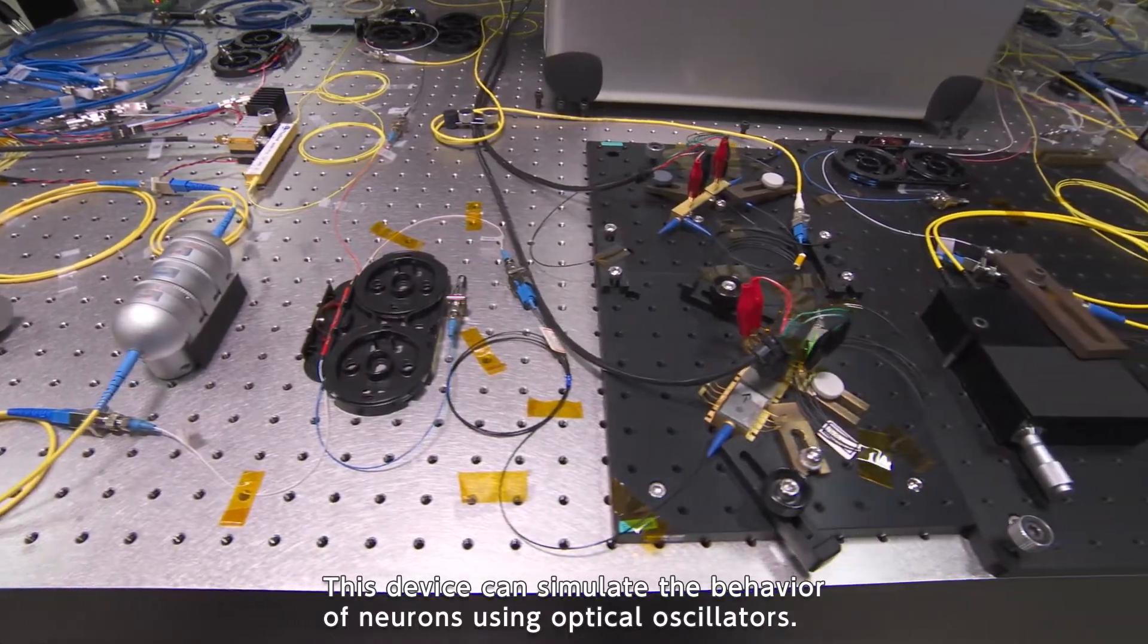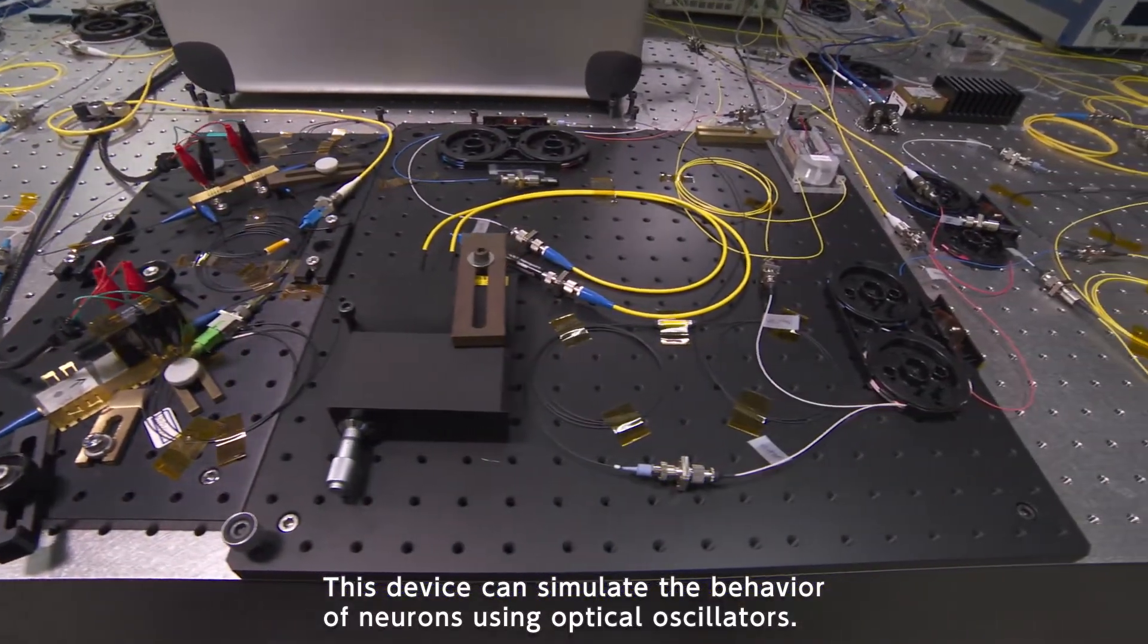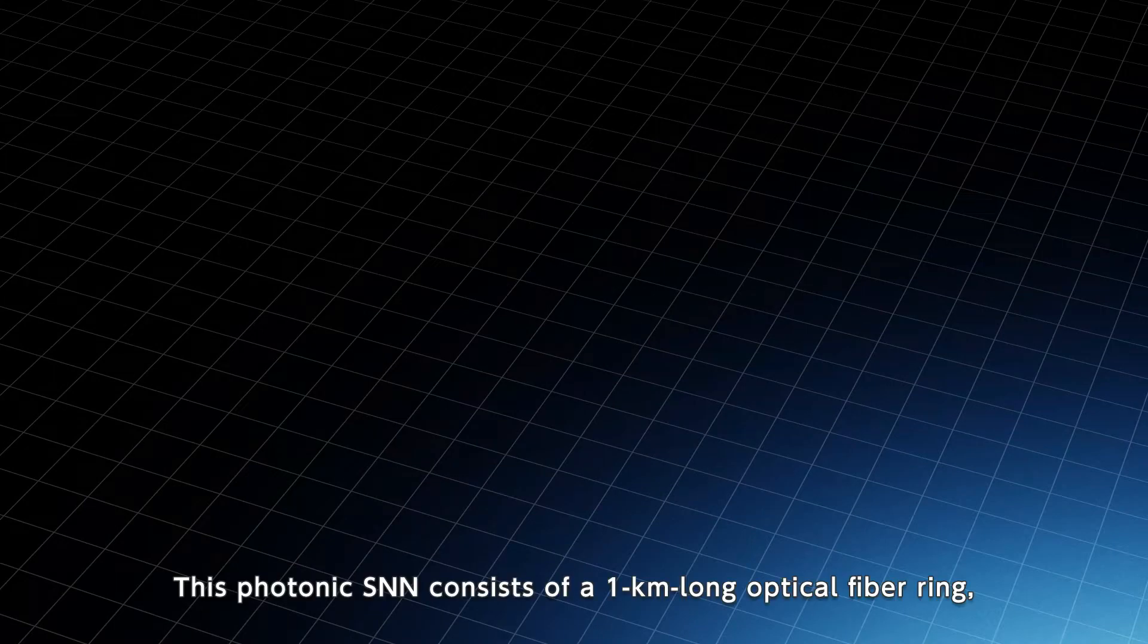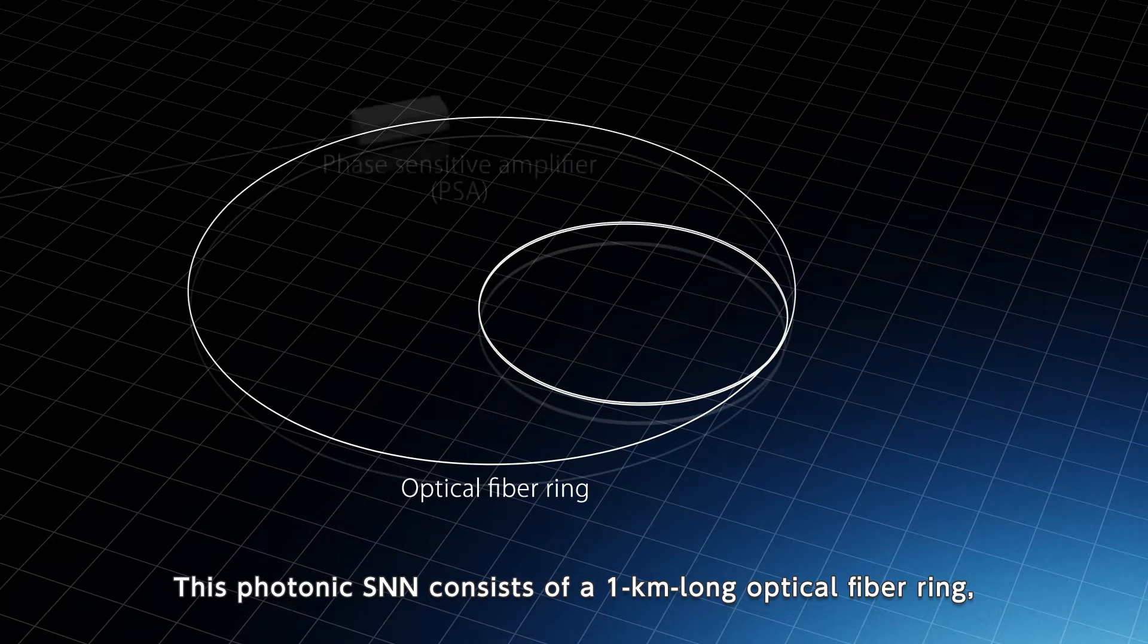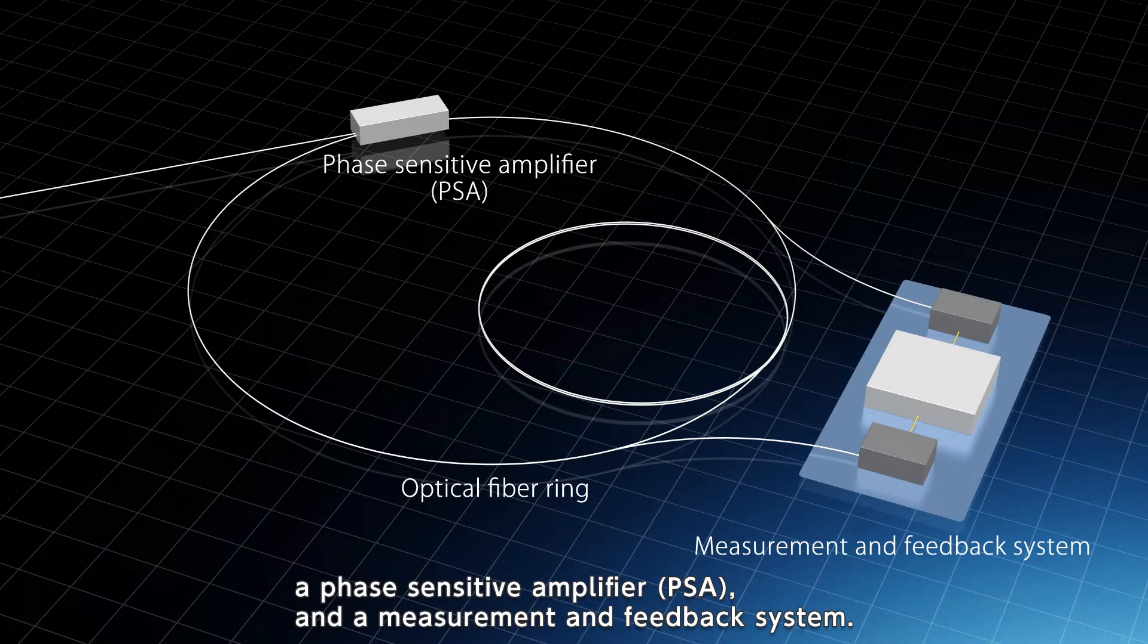This device can simulate the behavior of neurons using optical oscillators. This photonic SNN consists of a 1 km long optical fiber ring, a phase sensitive amplifier, and a measurement and feedback system.